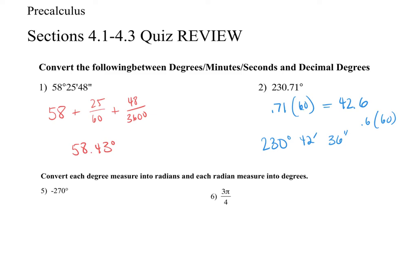For conversion between degrees and radians: if it's in degrees, multiply by pi over 180 — just reduce your fraction, no decimals. If you're converting the other way from radians to degrees, multiply by 180 over pi.